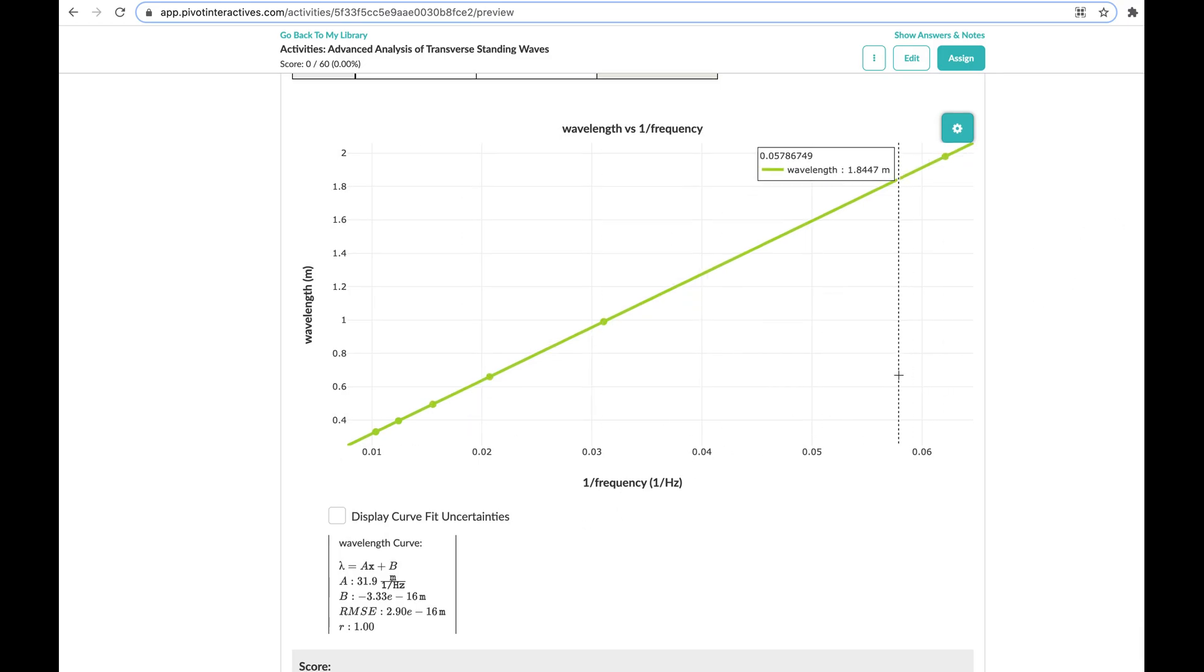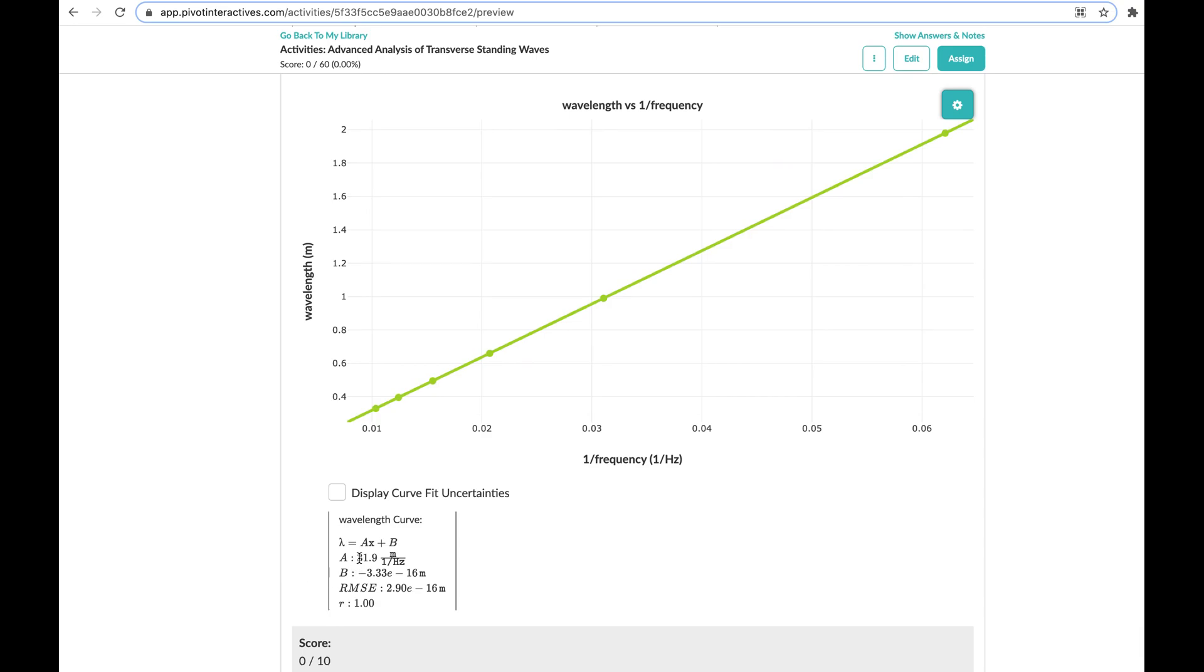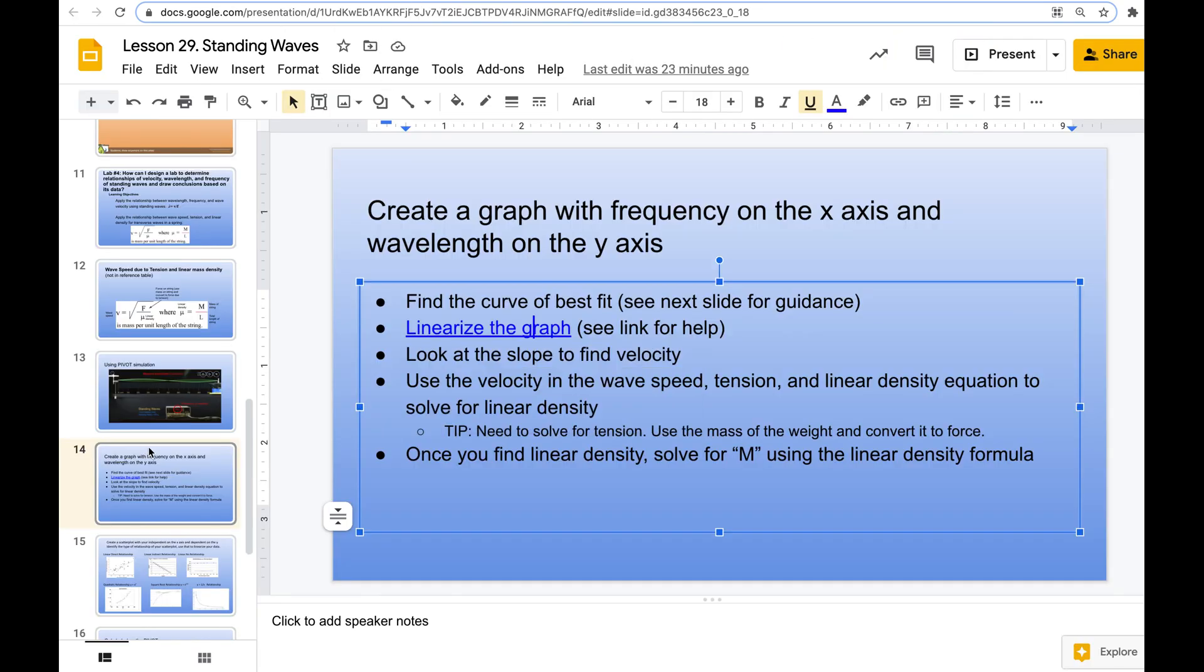And now we can see our slope, which is 31.9 meters over one over hertz. One over hertz is actually the same thing as seconds. So this becomes meters per second. So this is velocity. So this number right here is the velocity for this setup. So we linearized it. We looked at the slope to find velocity.